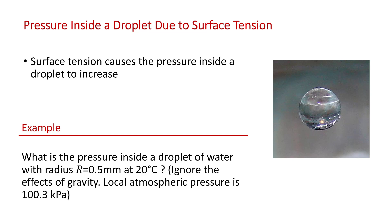The question asks, what is the pressure inside a droplet of water with a radius of half a millimeter at 20 degrees C? You're told to ignore the effects of gravity and that the local pressure is 100.3 kPa.